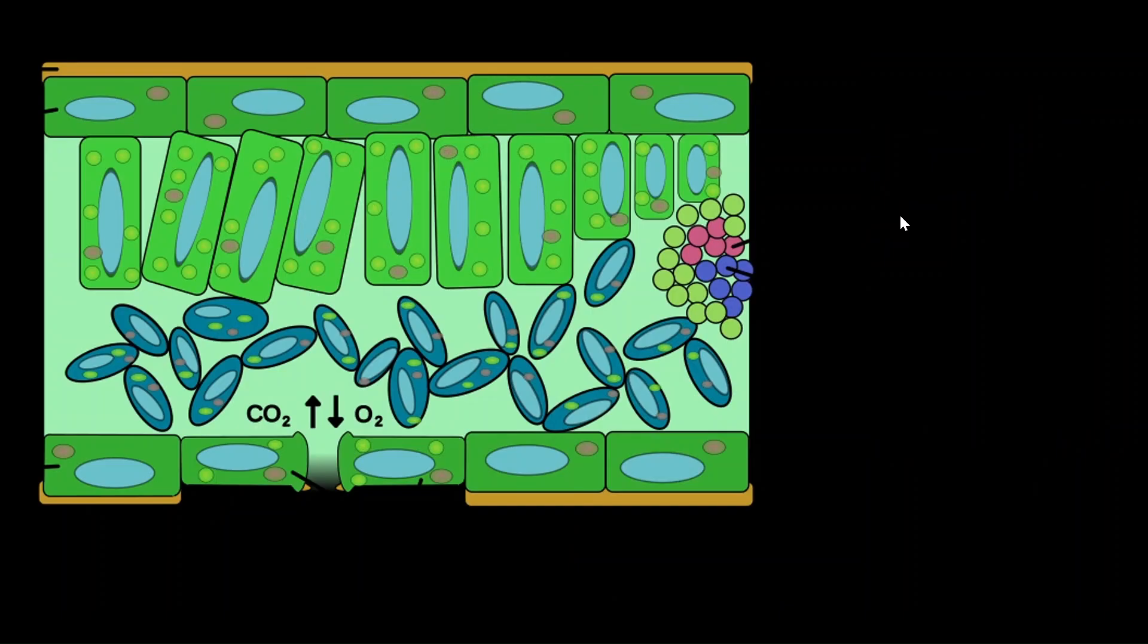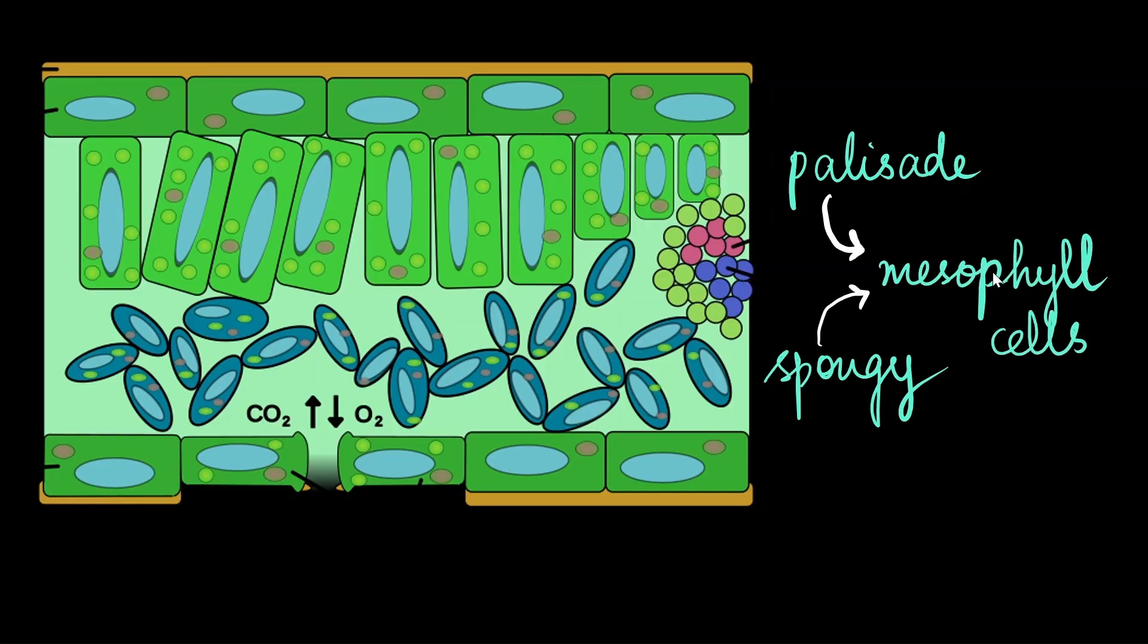The cells of the chlorenchyma are found in leaves as two specific cells. We have the palisade cells which are elongated and they are compactly arranged together. We have the spongy cells which are spaciously arranged and irregularly shaped. Together, they form the mesophyll cells in a leaf.